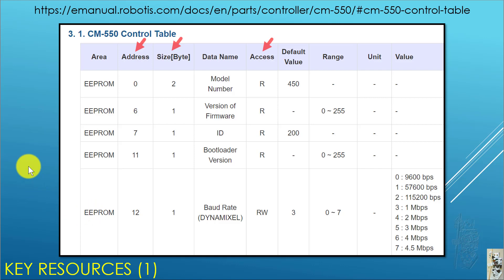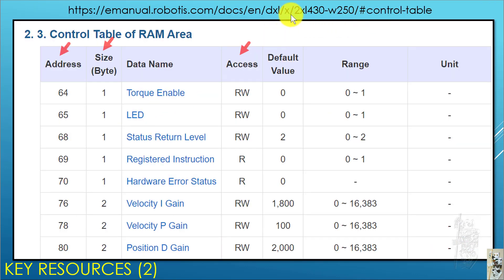There are three key resources that you need to have or need to use regularly if you want to convert task code to MicroPython code. The first one is the control table of the CM550. And you have the link here and this information is in English. The way we're going to be using it is we'll be concentrating on the address. The table has different parameter names, each parameter name corresponding to a specific address. What is the size of that parameter? And how do you access it? Is it read only or read write? So this is key resource number one, the CM550 control table.